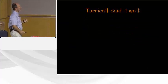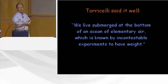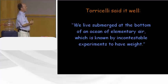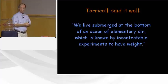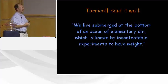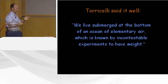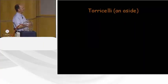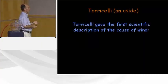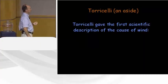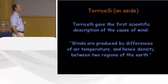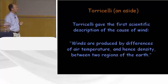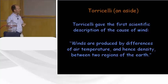Torricelli said it well: 'We live submerged at the bottom of an ocean of elementary air, which is known by incontestable experiments to have weight.' This was back in the 1600s. As an aside, Torricelli also gave the first scientific description of the cause of wind: winds are produced by differences of air temperature and hence density between two regions of the Earth.